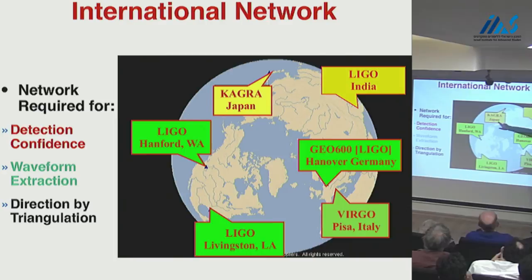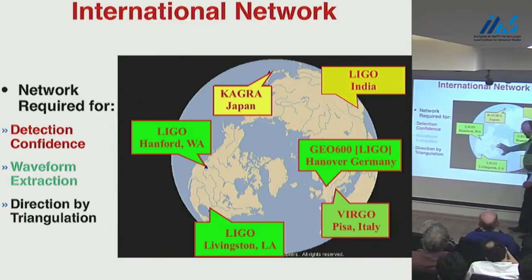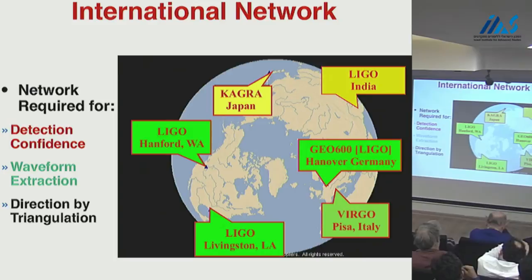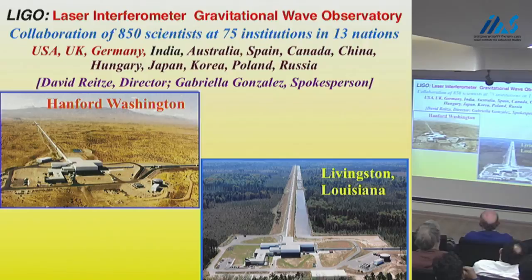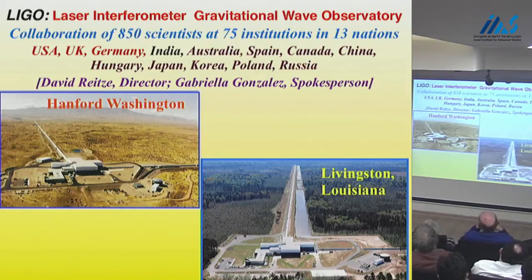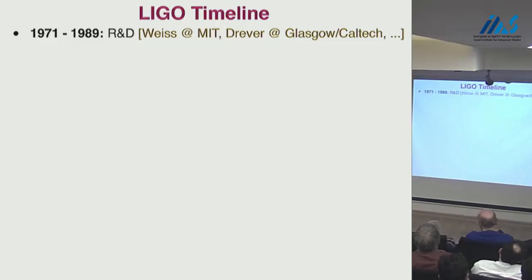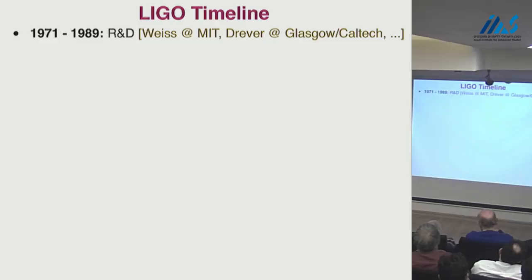There is an international network of these detectors: LIGO detectors in Livingston Louisiana and Hanford Washington; the GEO600 developmental facility built by the British and Germans in Hanover; the Virgo detector, a French-Italian-Dutch collaboration in Pisa, Italy; a LIGO detector to be built in India; and the Japanese KAGRA detector being built underground. The green ones are basically operational now or will be very soon; the yellow ones will come along in another five years or so.